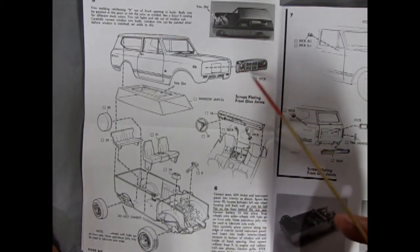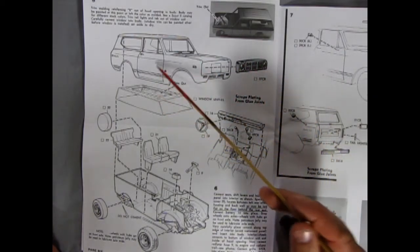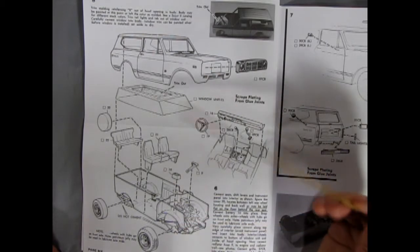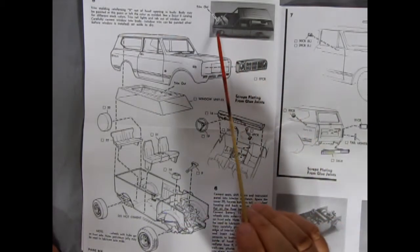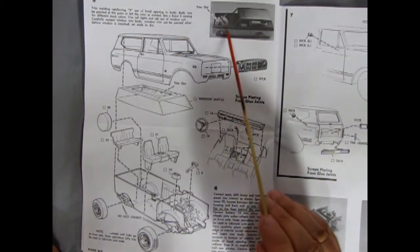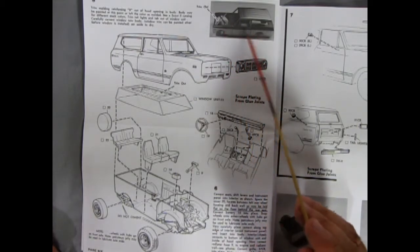Then we have our grille going into the body and our glass going up and all this will compress together to build our International. And again we've got a photograph showing to trim out that cross web in between the fenders.